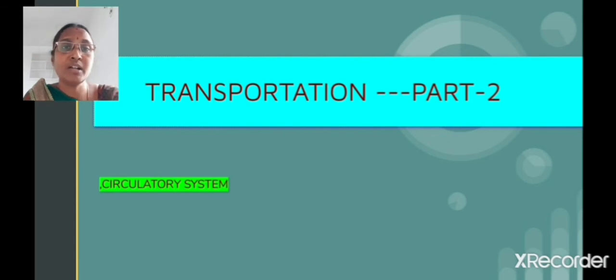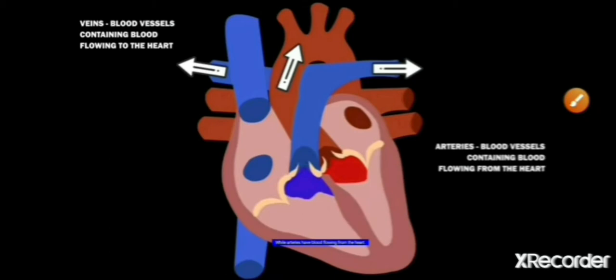Now watch in detail how blood flows through the heart. Let us know about the arteries and veins. Arteries are the blood vessels which originate from the heart and supply blood to various organs in the body. They have thick walls. The largest artery is the aorta and the smallest is the pulmonary artery. All arteries carry oxygenated blood, whereas the pulmonary artery carries deoxygenated blood. The veins are the blood vessels which bring blood from all parts of the body to the heart. Veins have relatively thin walls and carry deoxygenated blood, except the pulmonary vein which carries oxygenated blood.